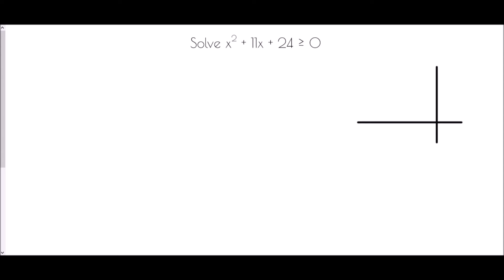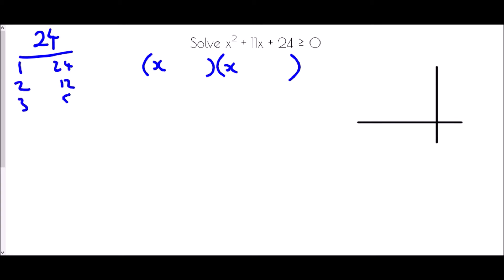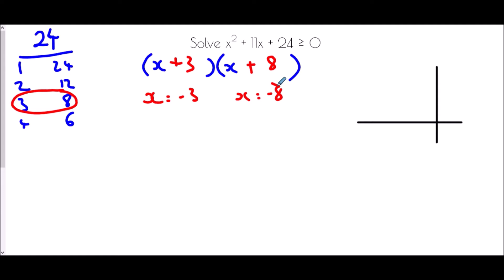Next we are asked to solve x squared plus 11x plus 24 is greater than or equal to 0. It's a quadratic, so let's try to factorise first. We need a pair of numbers which multiply to make 24 but add to make 11: the pairs are 1 and 24, 2 and 12, 3 and 8, 4 and 6. The pair that adds to 11 is 3 and 8. So the solutions are x equals negative 3 and x equals negative 8, meaning the graph crosses at negative 8 and negative 3.